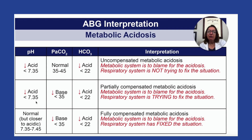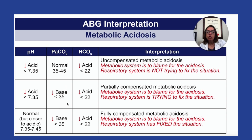Then if we go to the second row, again, if the pH is under 7.35, we have acidosis. Who's to blame? If we look at PaCO2, it is under 35, which means it's basic. So we definitely know that the respiratory system is not to blame for the acidosis.